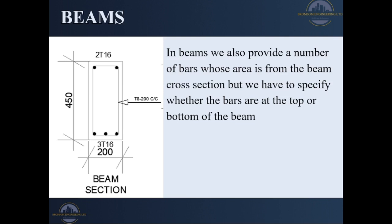Secondly, we move to beams. In beams, we provide a number of bars whose area is from the beam cross-section, but we normally have to specify the top and the bottom bars separately. This is because they are both used for different functions — the top is used for hogging moments and the bottom is used for deflection. So in our beam, we have two 16 millimeter bars at the top and three 16 millimeter bars at the bottom, showing we needed more bars for deflection than for hogging. We do not use the shear links for determination of the area of steel provided in our beams.